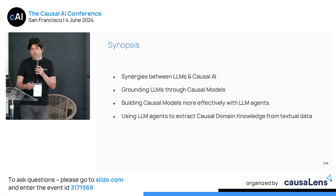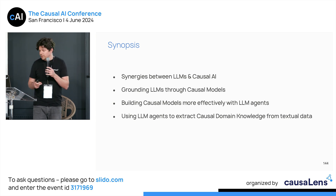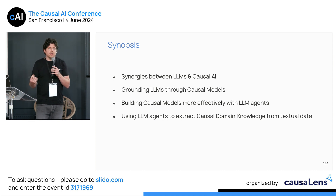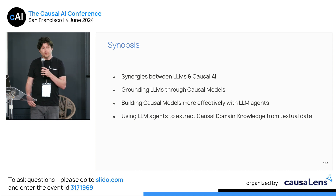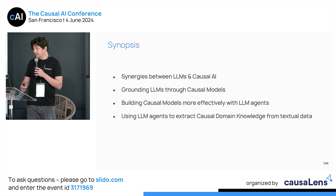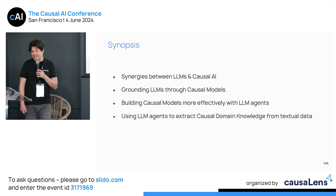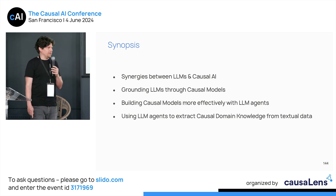We'll talk about the synergies in a broad sense and how to think about large language models, and then three very specific integration points between large language models and causal AI: grounding large language models with causal AI, building large language models more effectively, and using them to extract causal domain knowledge.